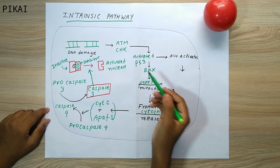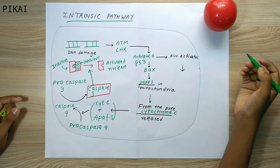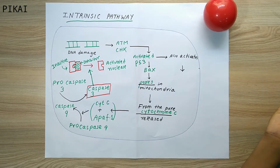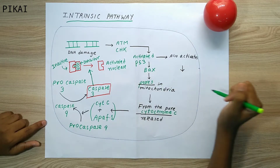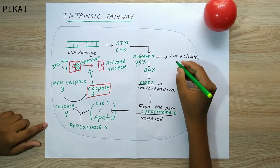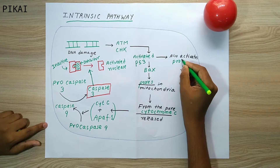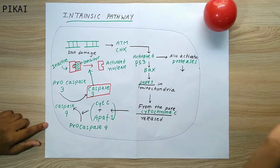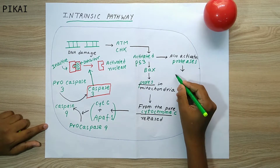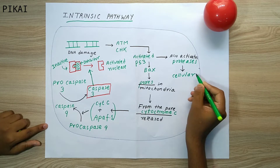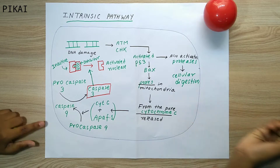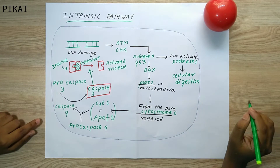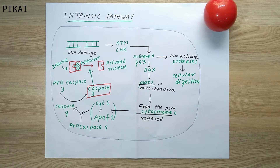There is also a side pathway where activated p53 activates proteases. These proteases digest the proteins inside the cell, causing cellular disintegration — destroying the cell membrane, the cytoskeleton, and ultimately the structure of the cell.